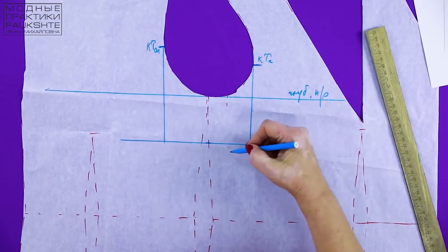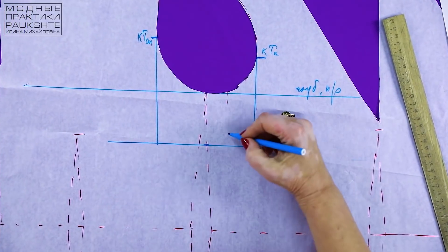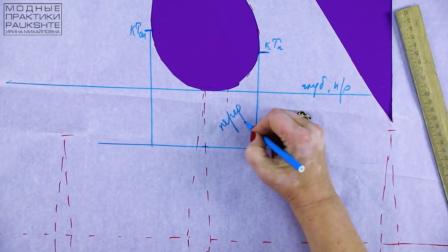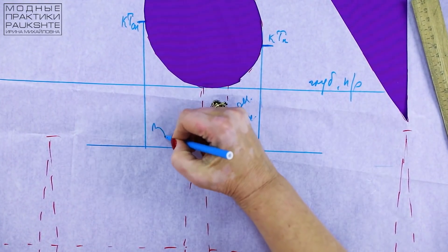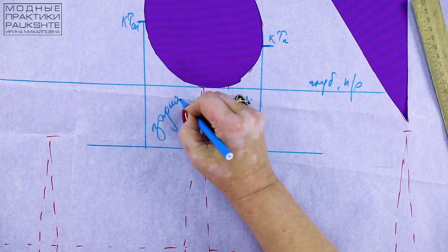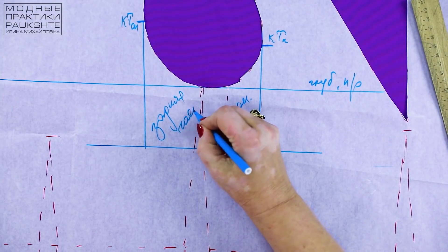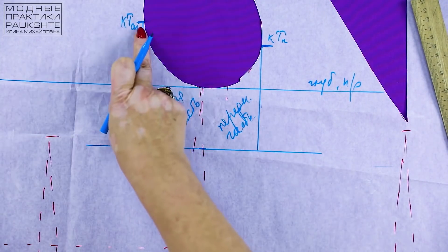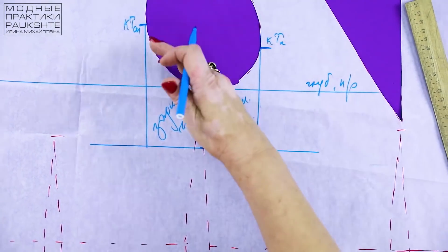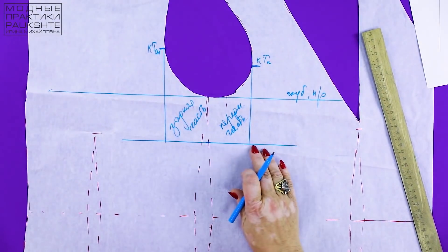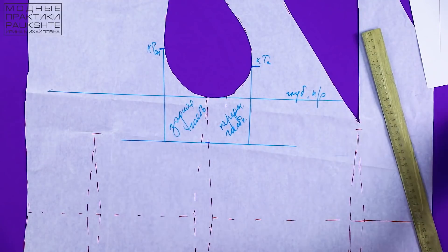This is the piece I'm going to cut now. I'll sign it. Front part. Back part. I think that everything is clear so far. The round beautiful armhole is turning into a square one. I'll cut it now.